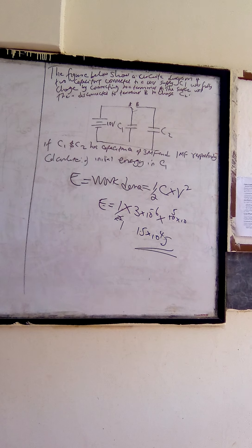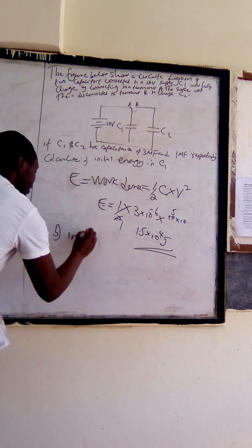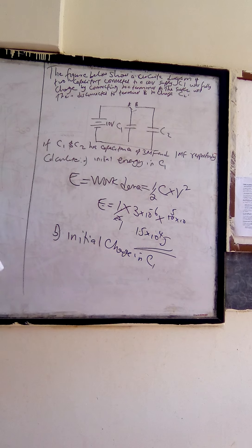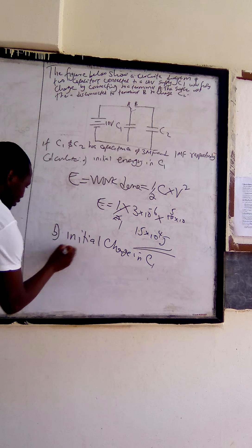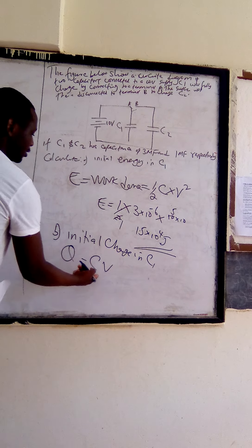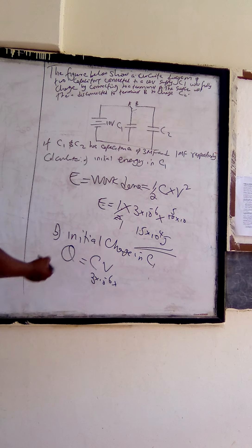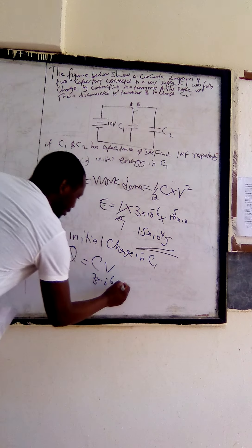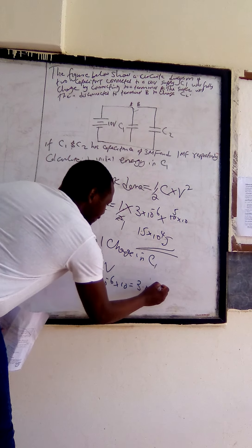Part B, we are going to calculate the initial charge in C1. To obtain the charge, we know that charge is given by Q equals CV. So we get the capacitance of C1, that is 3 times 10 power negative 6 multiplied by 10, which gives us 3.0 times 10 power negative 5 coulombs.